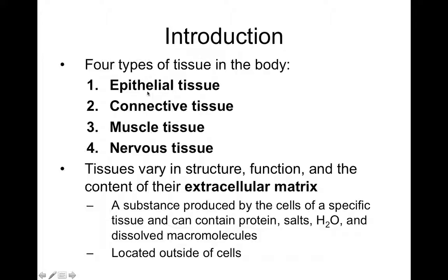Extracellular matrix is all the material found outside of a cell in a tissue — water, solutes, protein, fat, and other things that fill the tissue other than the cell itself. Tissues vary in the quantity and composition of their extracellular matrix. We define these tissue types based on their composition, including the subtypes of each.